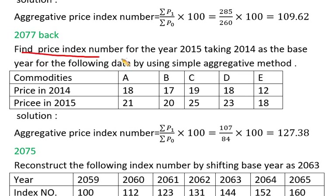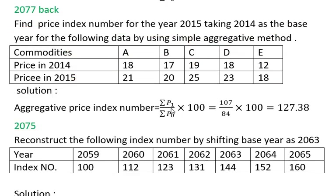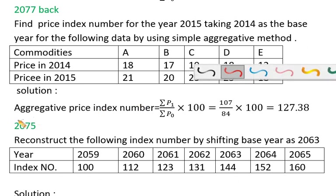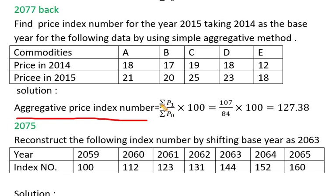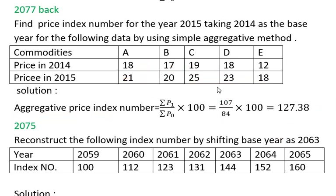Calculate the price index number for the year 2015 taking 2014 as the base year for the following data, using the simple aggregative method. Commodities with their prices are given. We add the price values: 21, 25, 23, and 18 to compute summation P1 by summation P0.